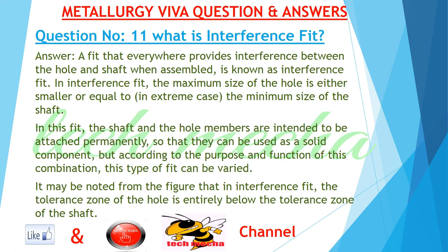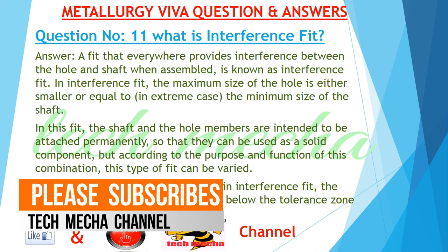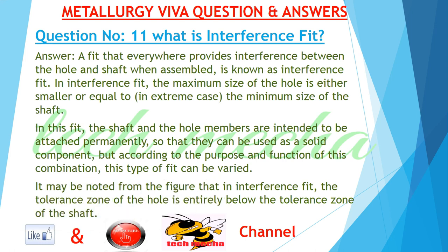Question 11: What is Interference Fit? Answer: A fit that everywhere provides interference between the hole and shaft when assembled is known as Interference Fit. In Interference Fit, the maximum size of the hole is either smaller than or equal to (in extreme case) the minimum size of the shaft. The shaft and hole members are intended to be attached permanently so that they can be used as a solid component. It may be noted from the figure that in an Interference Fit, the tolerance zone of the hole is entirely below the tolerance zone of the shaft.